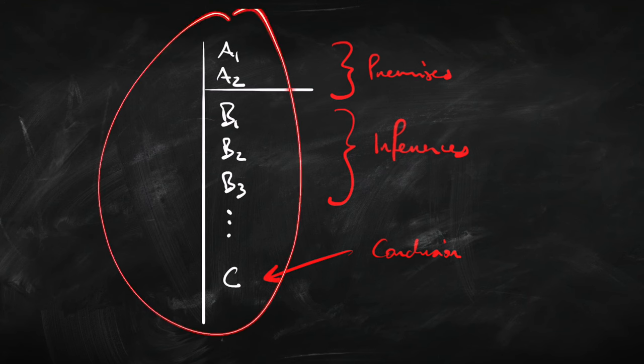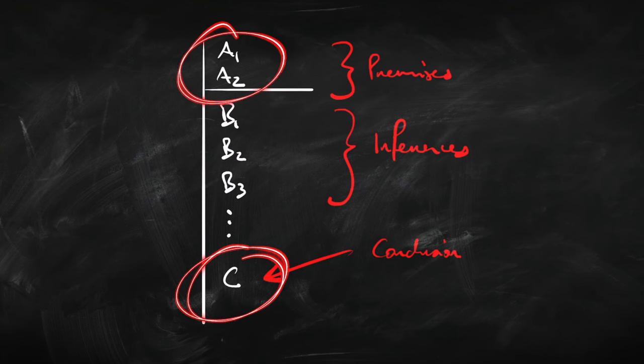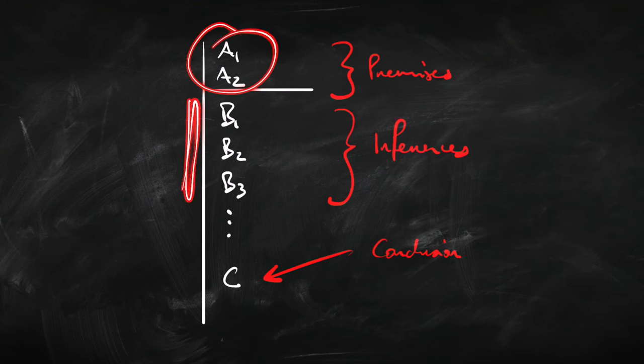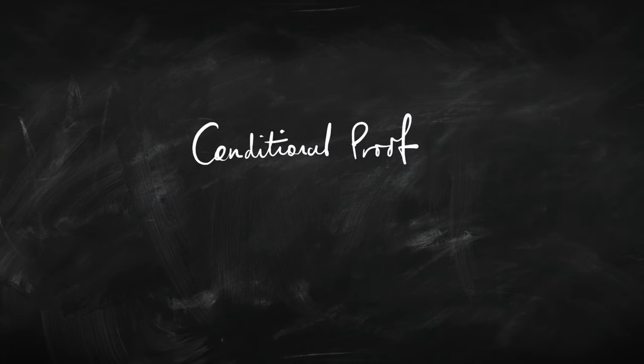When we have a proof like this, we will say that we've proved this conclusion from these premises. Now, if we keep it like that — just premises and things directly derived from them — there's not much of interest that we can prove. We need to add a very powerful rule called conditional proof. It might be the most important proof rule we're going to meet in natural deduction.